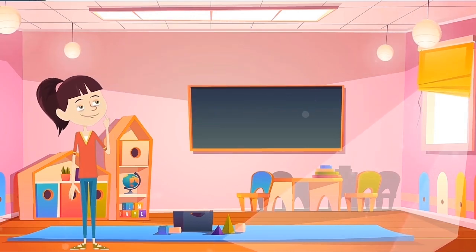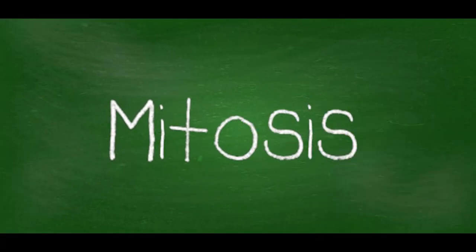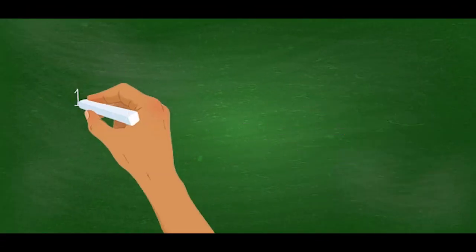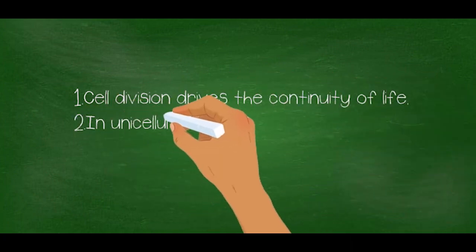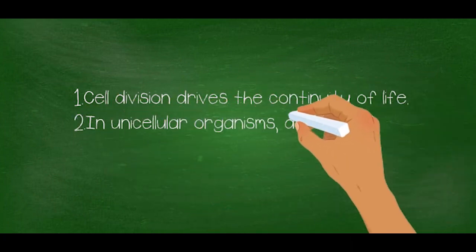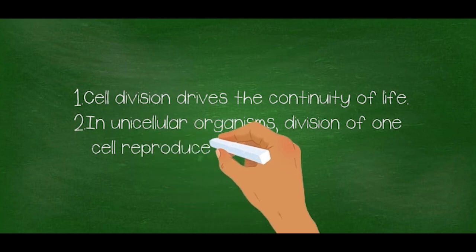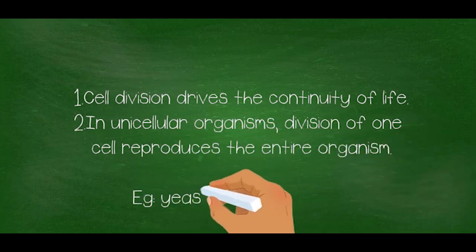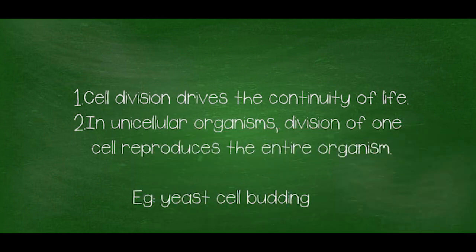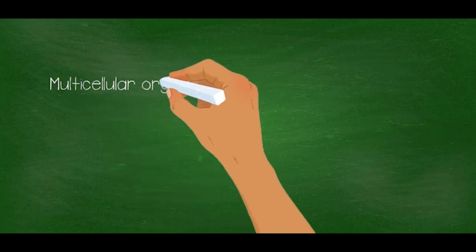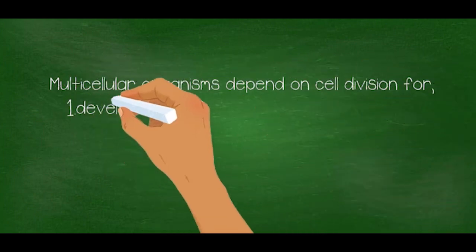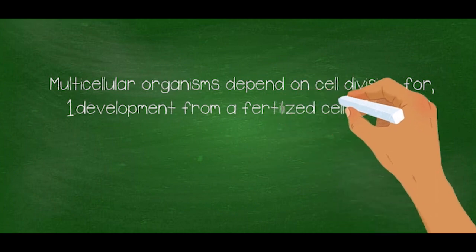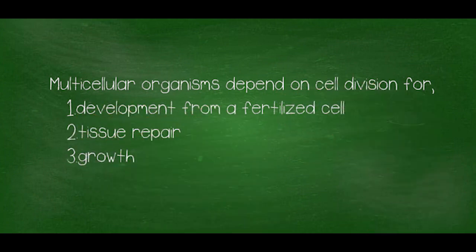It was the last lesson of our class — Mitosis. Cell division drives the continuity of life. In unicellular organisms, division of one cell reproduces the entire organism — for example, yeast cell budding. Multicellular organisms depend on cell division for development from a fertilized cell, tissue repair and growth.